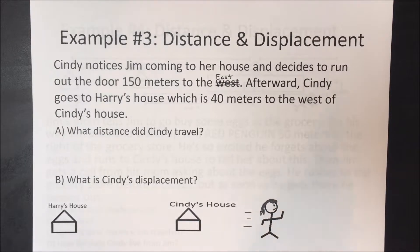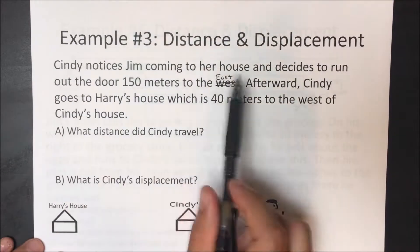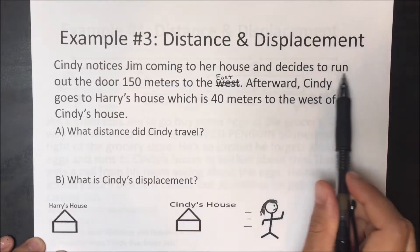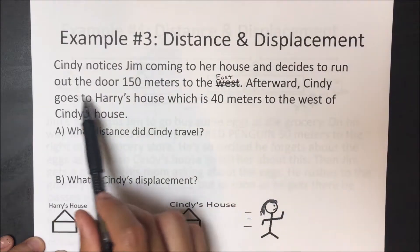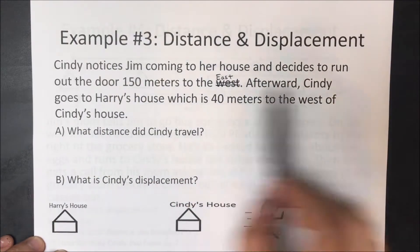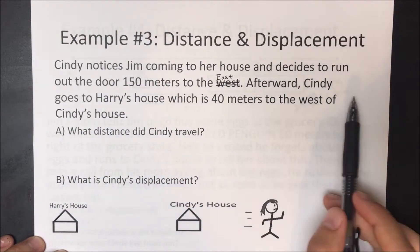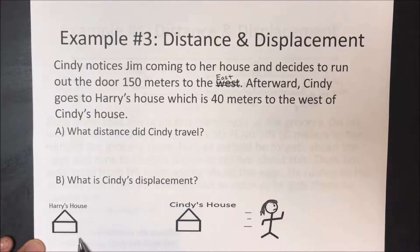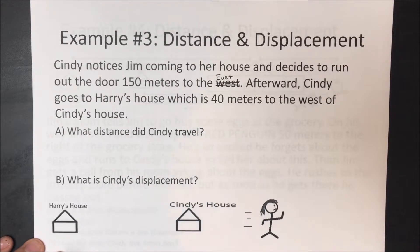Example number three. Cindy notices Jim coming to her house and decides to run out the door 150 meters to the east. Afterwards, Cindy goes to Harry's house, which is 40 meters to the west of Cindy's house.